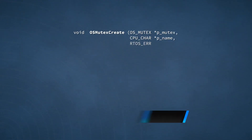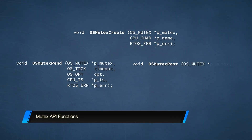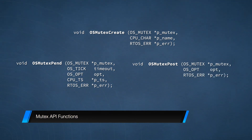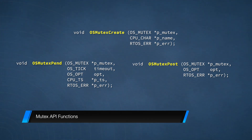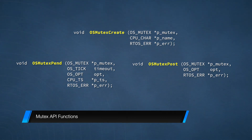These are the three API functions that you're likely to encounter most often when working with mutexes: OSMutexCreate, OSMutexPend, and OSMutexPost. They closely resemble the three semaphore functions that we discussed in our last episode. Rather than enumerate the many similarities between them, let's examine their differences.